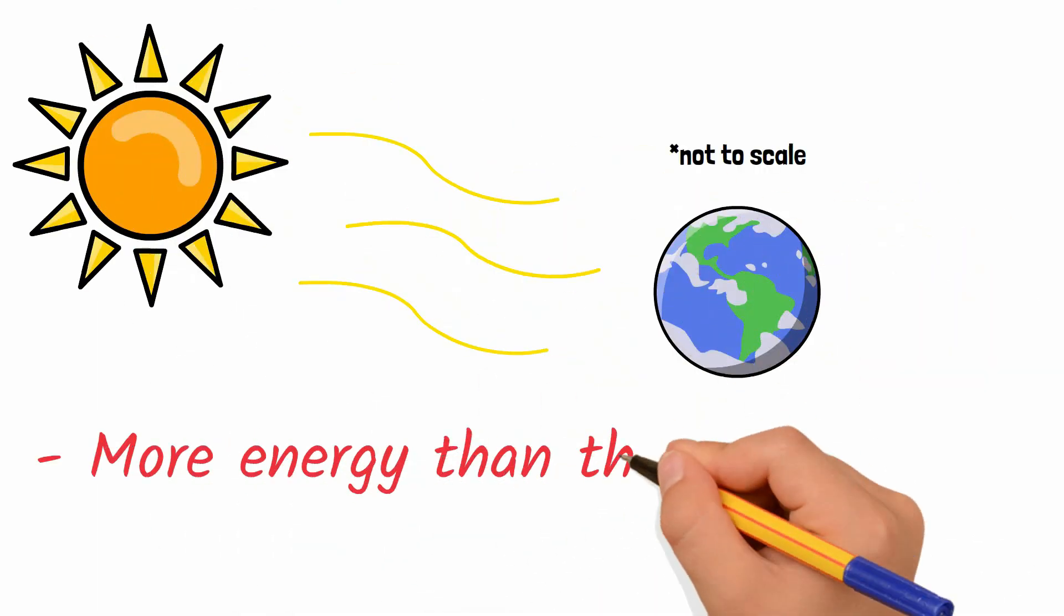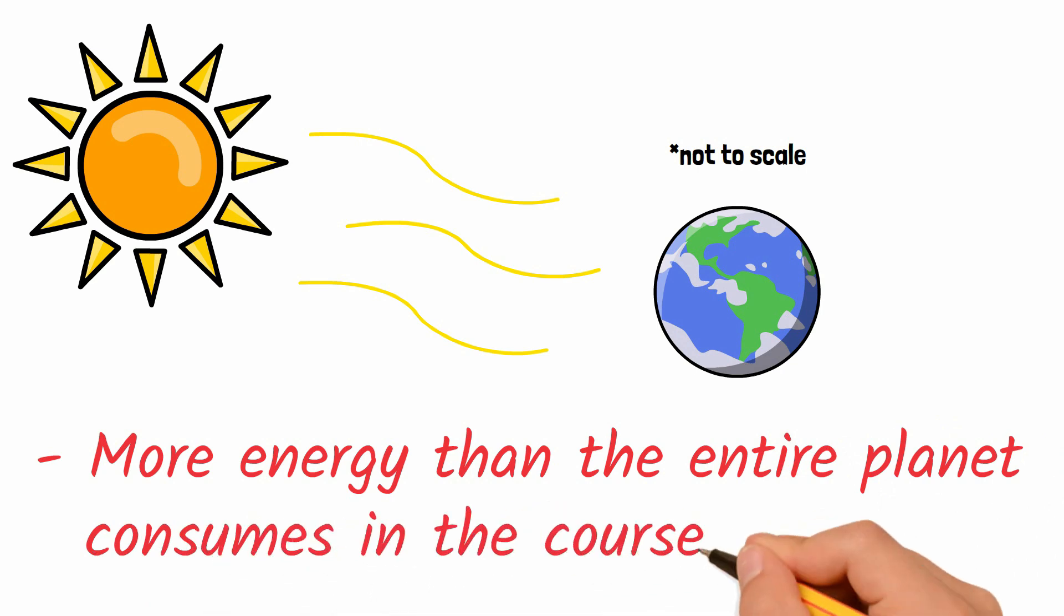For example, the amount of solar energy that hits the Earth in a single day is more than the entire planet consumes in the course of a year. And that's just the energy that hits the Earth.